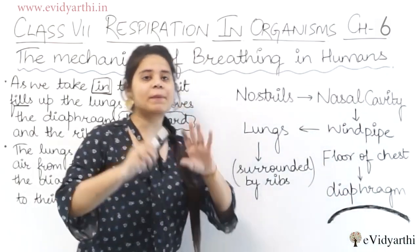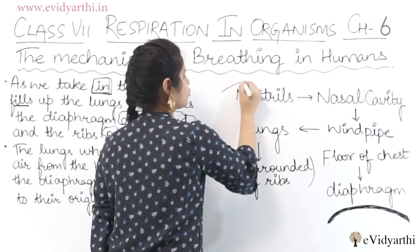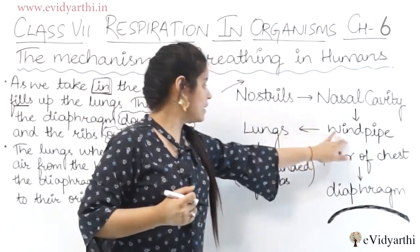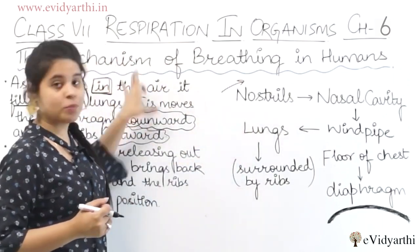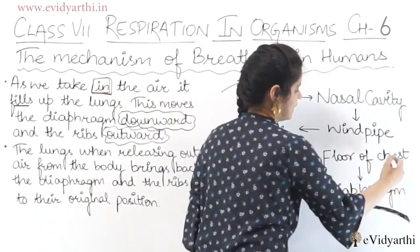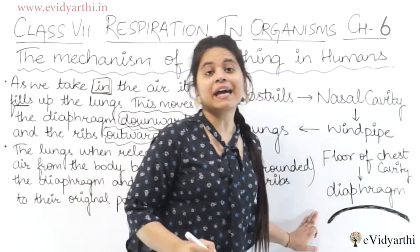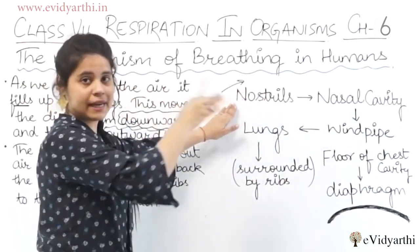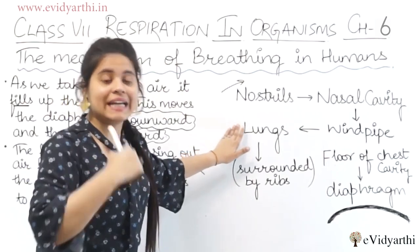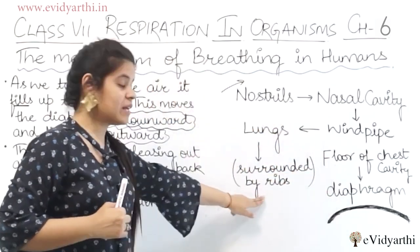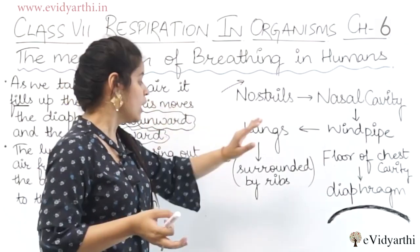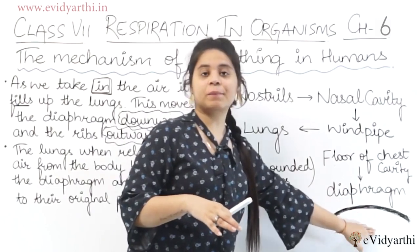To summarize the mechanics: air enters through the nostrils, passes through the nasal cavity, then through the windpipe, and reaches the lungs. The lungs are surrounded by ribs and the chest cavity, with the diaphragm as the floor. When we inhale, the diaphragm moves downward and the ribs move outward. When we exhale, the ribs and diaphragm return to their original positions.